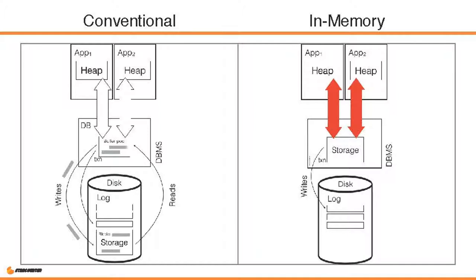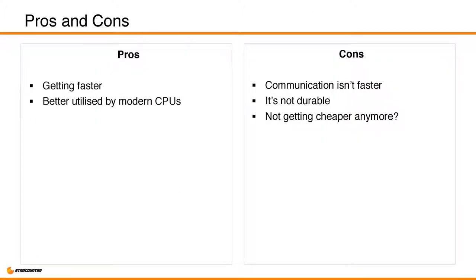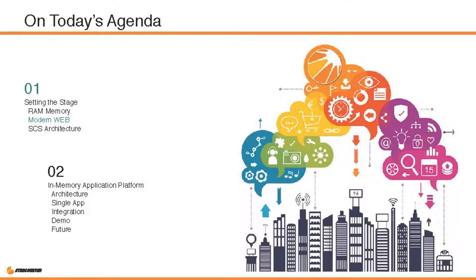To sum up RAM and in-memory databases: RAM is getting faster and better utilized by modern CPUs, but communication with in-memory databases isn't faster. RAM is also not durable yet — at least not without approaches like Intel's 3D XPoint, which I'll return to later. And we're not sure if memory is getting cheaper anymore, so we should look for more efficient usage of it.